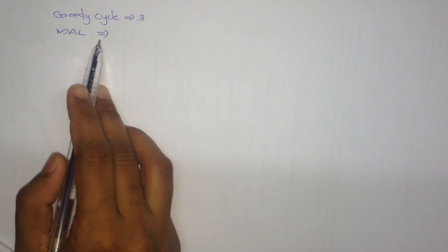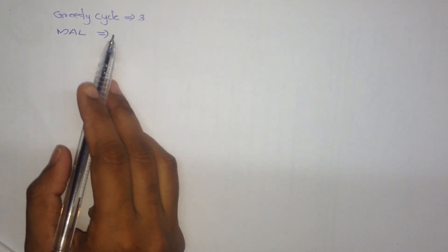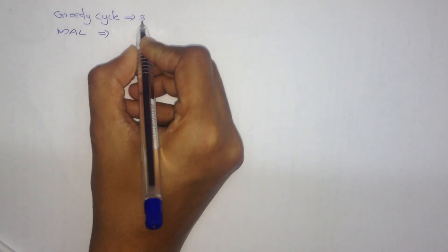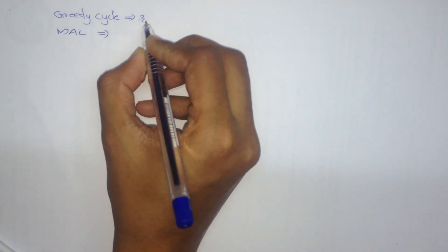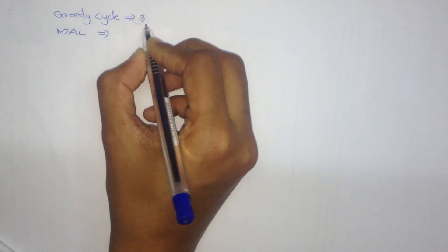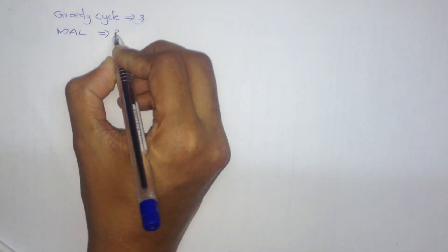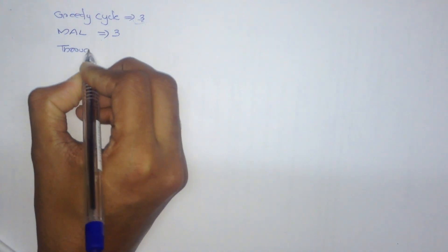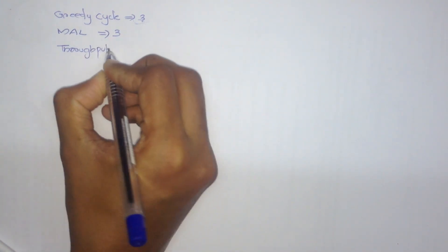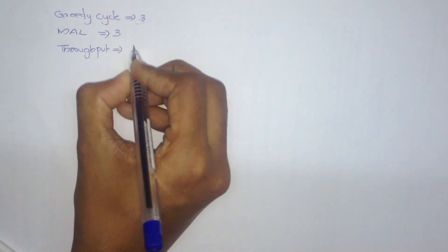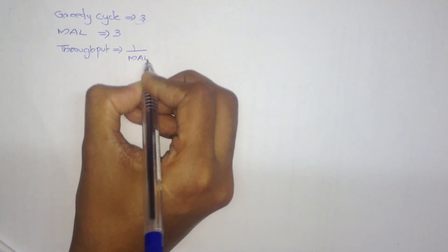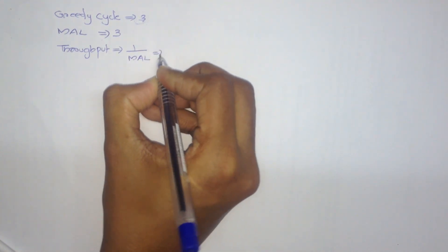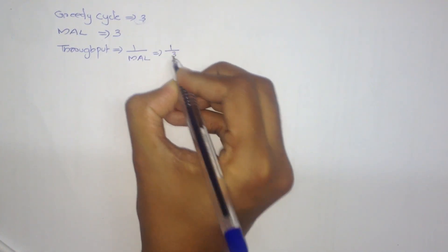Now we have to find the MaL — that is, the minimum of the greedy cycle. Here there is only one value, so MaL will be 3. Now we have to find the throughput. Throughput equals 1 divided by MaL, which equals 1/3.